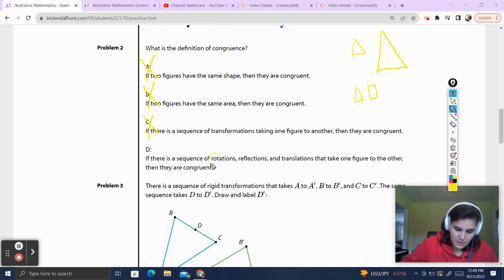D, if there is a sequence of rotations, reflections and translations, i.e., rigid transformations that take one figure to another, they are congruent. And that is a correct definition. So if we have rigid transformations, which only come in three different flavors, translations, rotations and reflections that move one shape to another, then we're good to go and we are congruent.